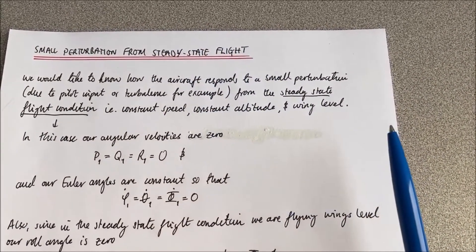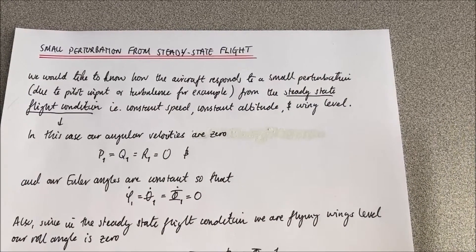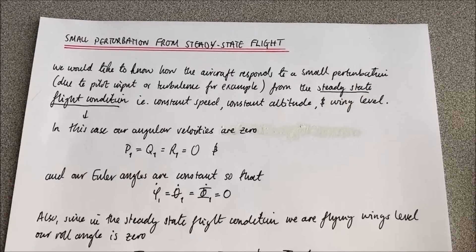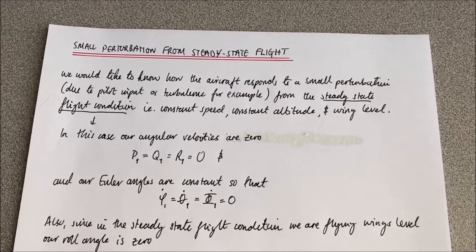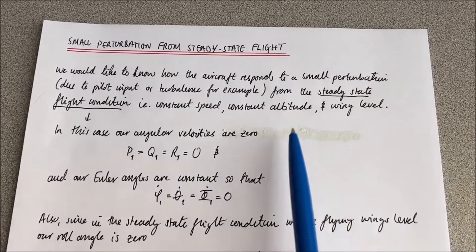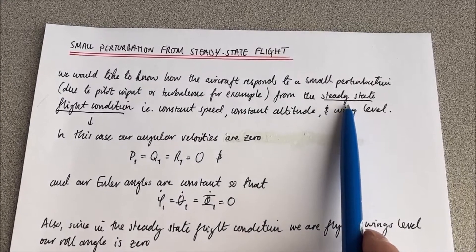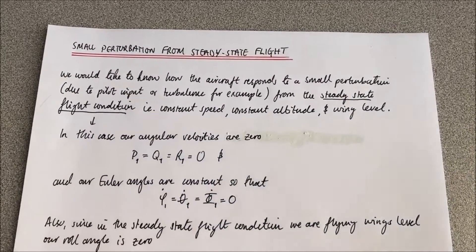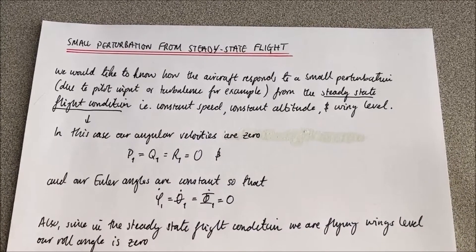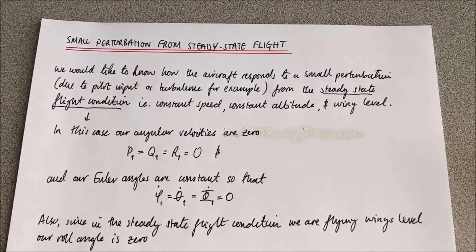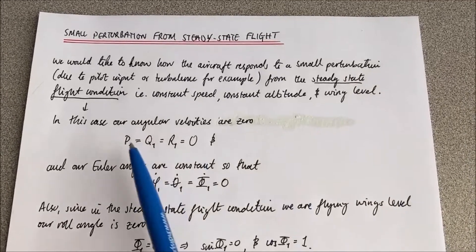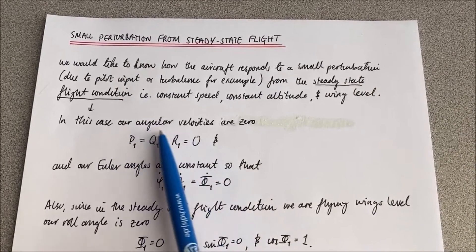Here we're looking at how the aircraft responds to a small perturbation, but from a specific flight condition, namely this steady state flight condition where we have constant speed, constant altitude, and wings level. So in this case all of our angular velocities start at zero.